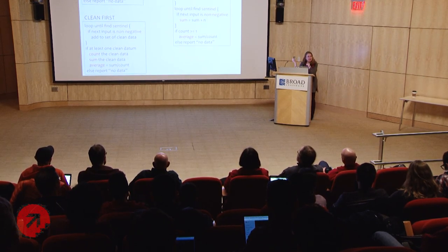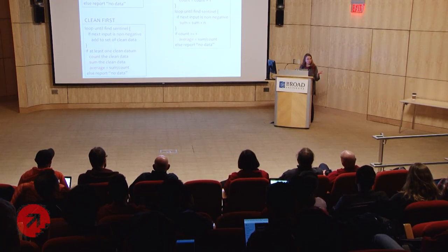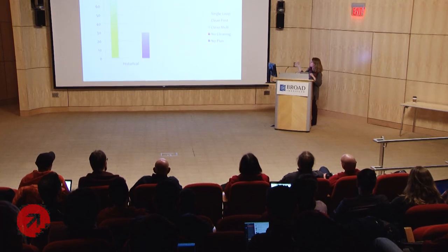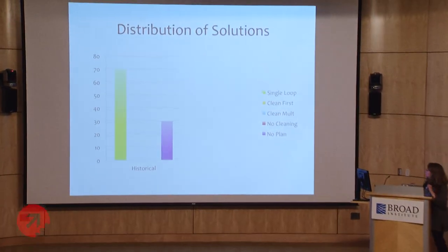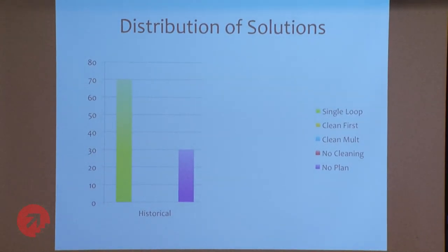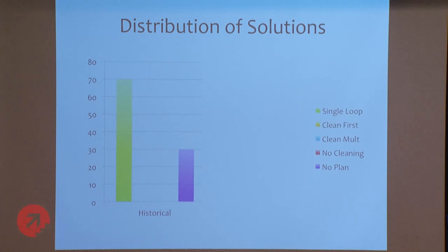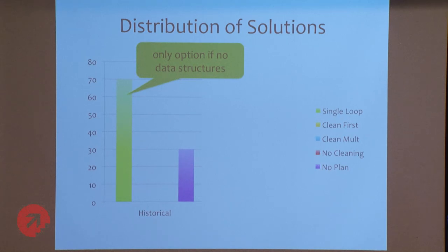Historically, what does the data look like? Taking various papers published on rainfall over time: 70-odd percent write a single loop, and 30-odd percent get nowhere. This is the typical kind of result. To be fair, a lot of the early papers were from the mid-80s when people were not teaching students data structures in CS1 — maybe they saw arrays late in the course. They certainly didn't have any kind of intermediate data structure as a pattern. So if you don't have the ability to store intermediate data, in some sense a single traversal is your only option. These trends were influenced by what people were teaching at the time.